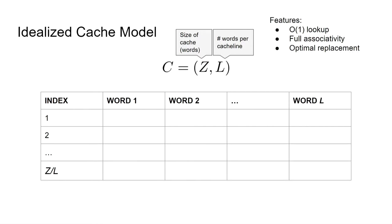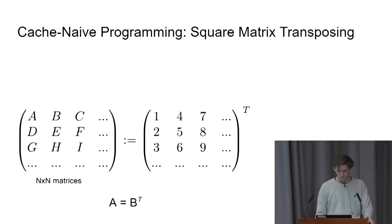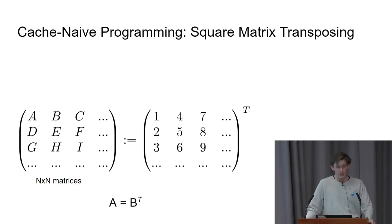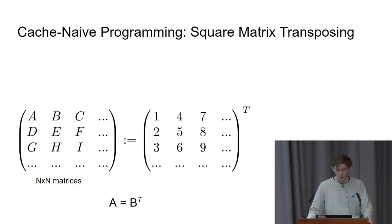This model of a two-level system also mathematically generalizes to multilevel caches. Before we get into cache aware and cache oblivious programming, let's look at cache naive programming for the square matrix transpose.